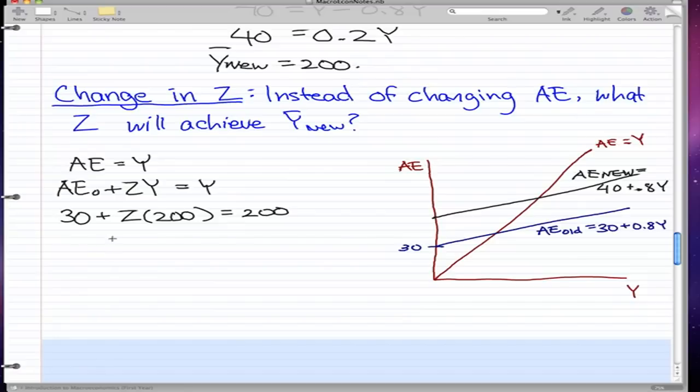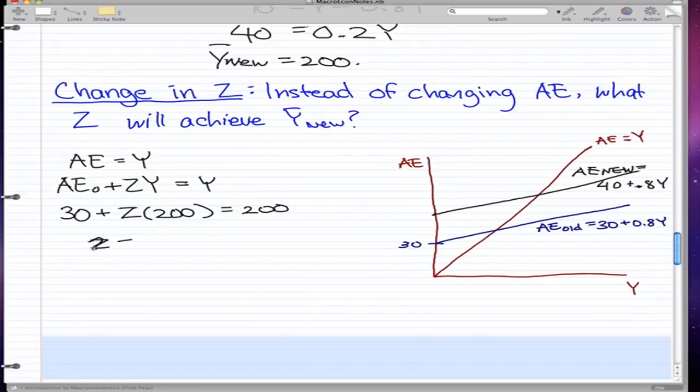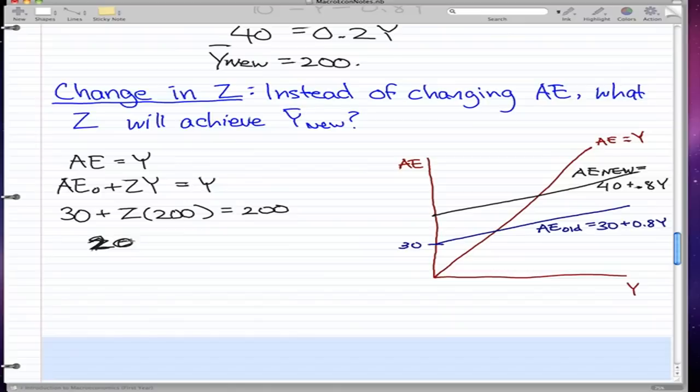Now, if we bring over 30 to the other side, we'll have 200Z equals 170, because 200 minus 30 is 170. So, if we divide 200 by both sides, we get Z equals 170 over 200, or we get 0.85.